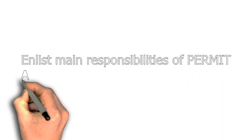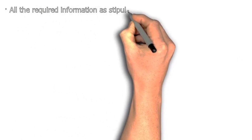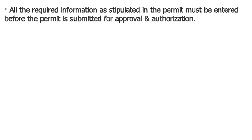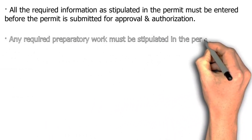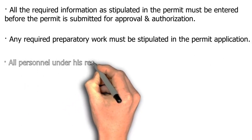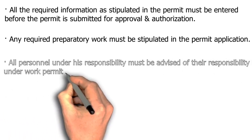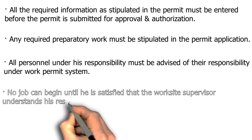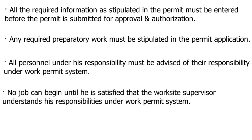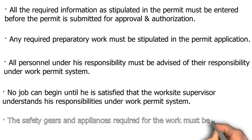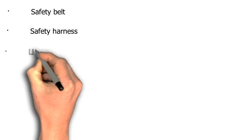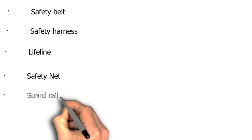Main responsibilities of a permit applicant: All required information stipulated in the permit must be entered before submission for approval and authorization. Any required preparatory work must be stipulated in the permit application. All personnel under his responsibility must be advised of their responsibilities under the work permit system. No job can begin until he is satisfied that the worksite supervisor understands the work permit system. The safety gears and appliances required for the work must be available. What are the fall protection systems? Safety belt, safety harness, lifeline, safety net, and guardrail system.